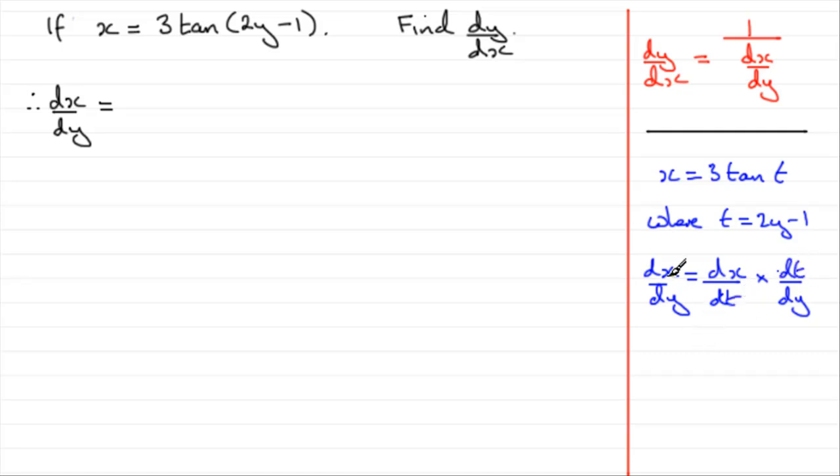So, finding dx dy is going to be dx by dt. Now, if x equals 3 tan t, you should know that the differential of tan anything is sec squared that anything. So, we're going to have 3 sec squared t. But t is 2y minus 1. So, that's going to go in there, 2y minus 1. I'll put all of that in brackets. So, that's dx dt.